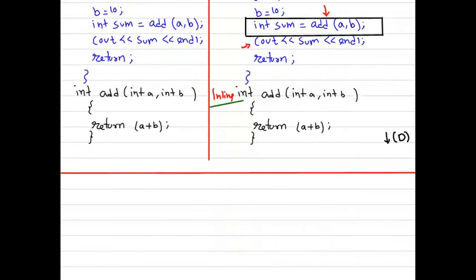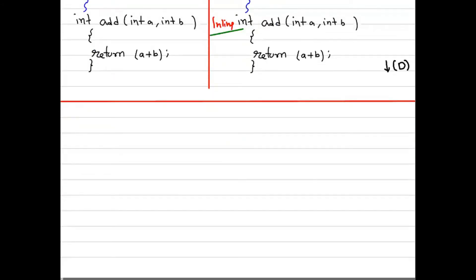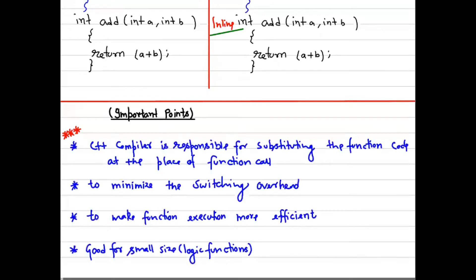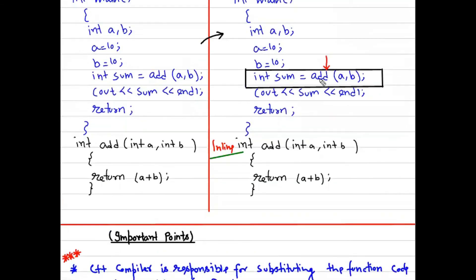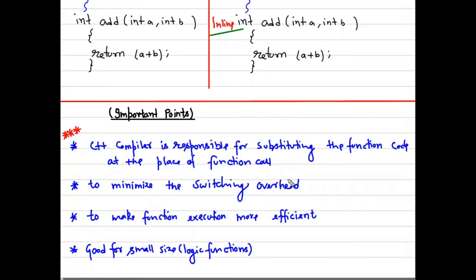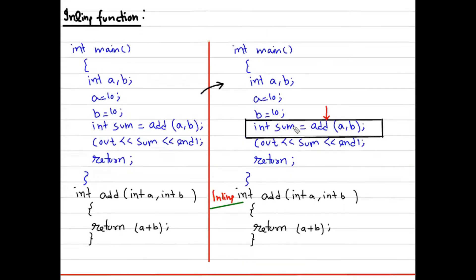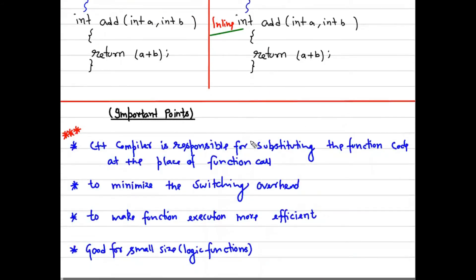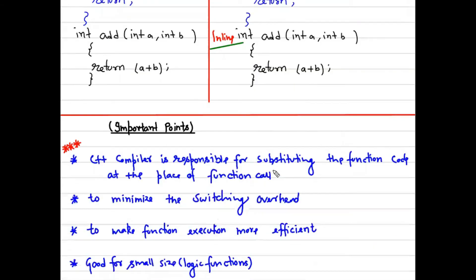I hope you're clear on the need for inline functions. Here are the important points: first, the compiler is responsible for substituting the function code at the place of the function call. Second, this is done to minimize switching overhead. Third, it makes function execution more efficient — the execution speed improves. And fourth, inline functions are good for small-size or small-logic functions.